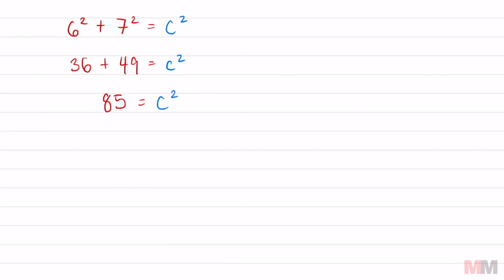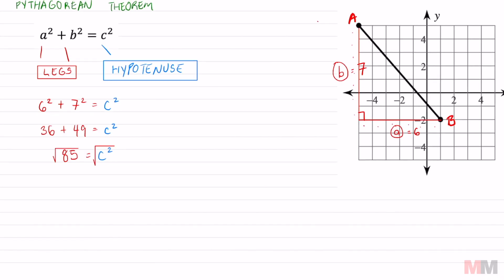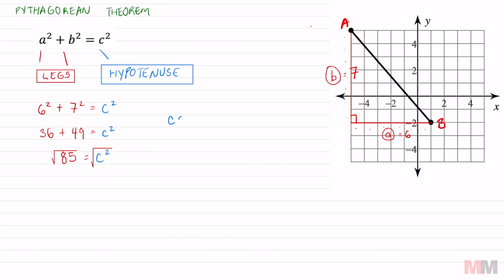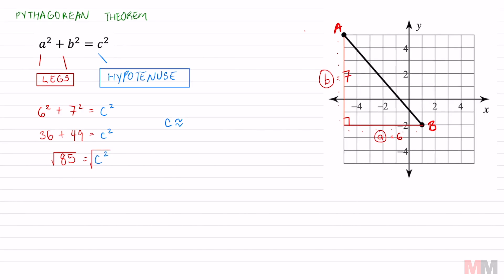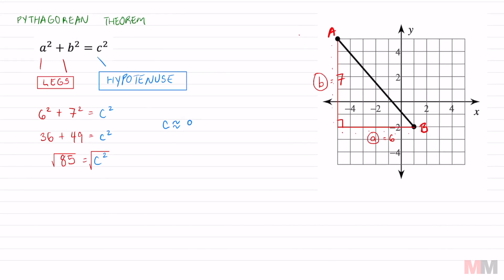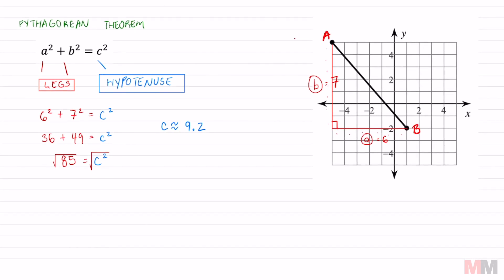And if you want to get c, if you want to get that diagonal distance, the last step of the Pythagorean theorem is just to square root both sides. And that will knock out that square from c squared. You're gonna have to round the answer.